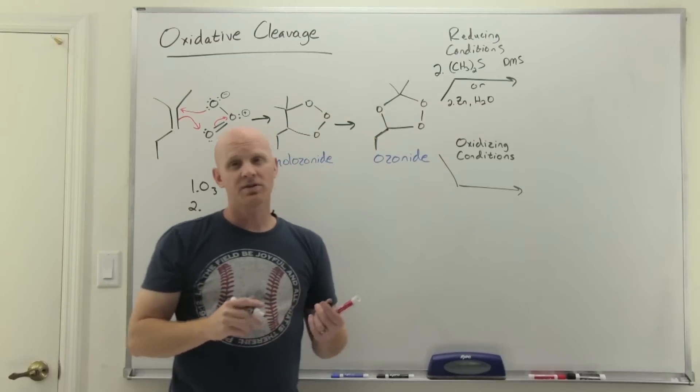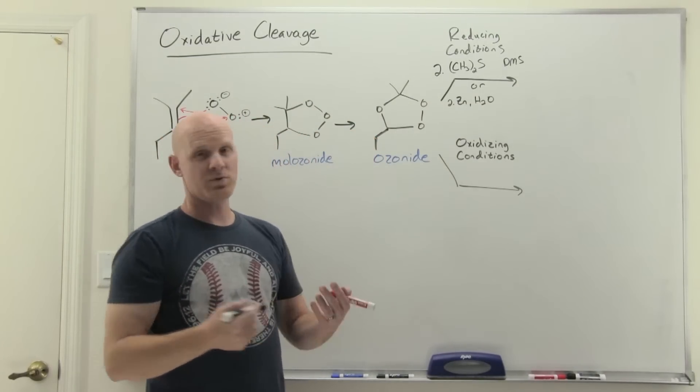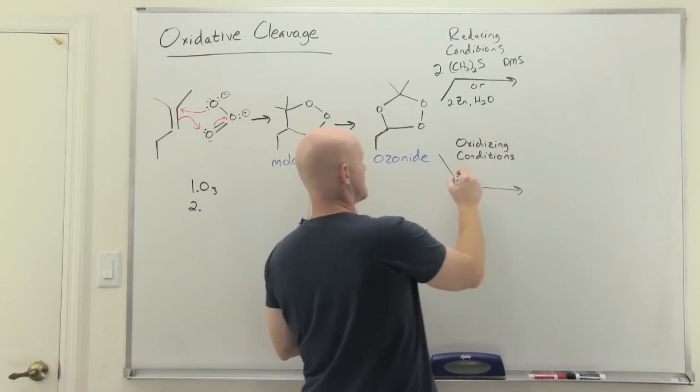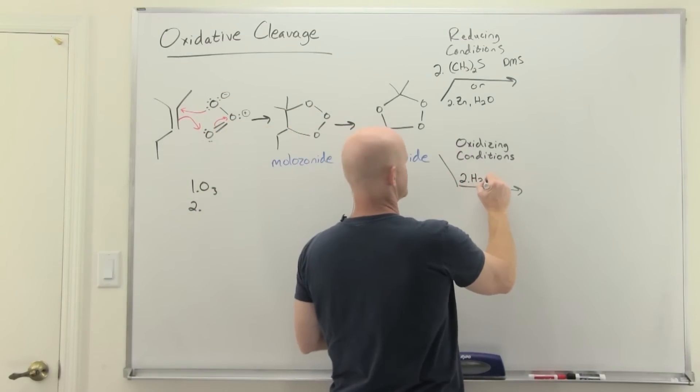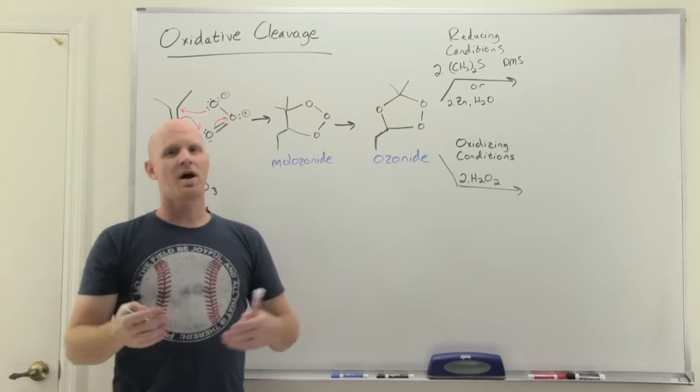Under oxidizing conditions we'll use a mild oxidizing agent. In this case for step two we use hydrogen peroxide, and this is going to slightly affect what products we get.